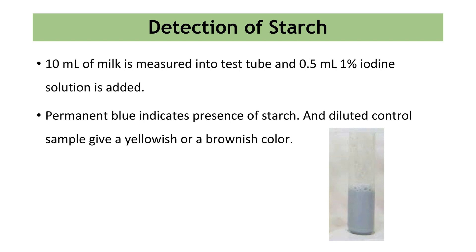The next most important adulterant in milk is starch. To detect starch in milk, 10 ml of milk is measured into a test tube and 0.5 ml of 1% iodine solution is added. Permanent blue indicates the presence of starch and diluted controls will give a yellowish or brownish color.